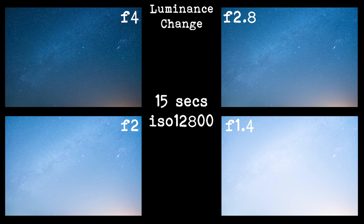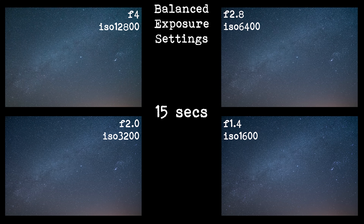Even though the difference between f4 and f1.4 is three stops of light, this is massive when you're shooting at night and can make the difference between a good shot and a bad shot. So I went out last night and shot a series of photos from f4 right through to f1.4. This first sequence shows you how much brighter three stops actually is in real terms — I've kept the ISO and shutter speed exactly the same between all of these shots. You can see the f1.4 lens lets in so much more light, which is why it's much better for astrophotography. Even though it's only three stops, this is eight times the amount of light it will actually let in.